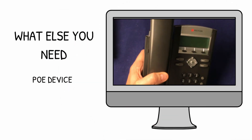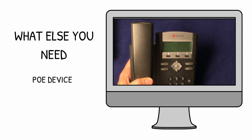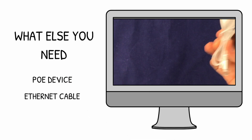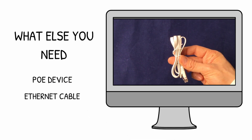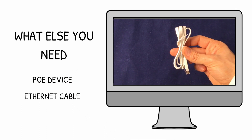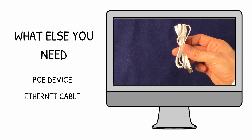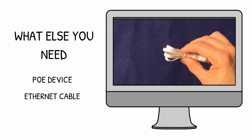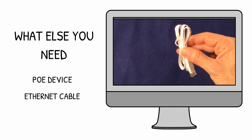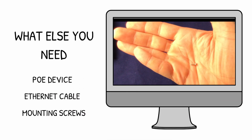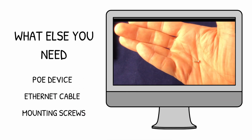You'll need a POE powered device, like a VoIP phone or Wi-Fi access point — double-check that it's POE powered before you plug it in. You'll also need ethernet cables long enough to connect to your data source and your devices. You can use CAT5e or CAT6, however CAT5 works great if that's what you have. You'll also need mounting screws for the GPOE-1B, if that's the model you use.